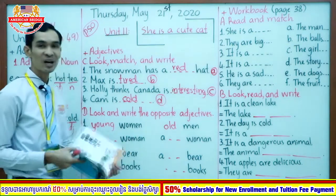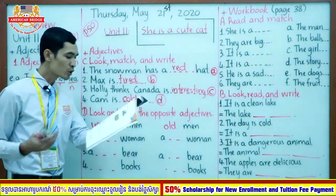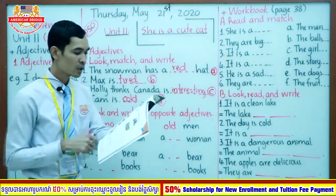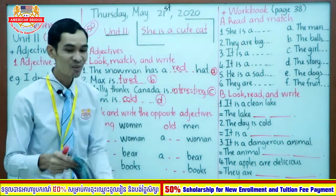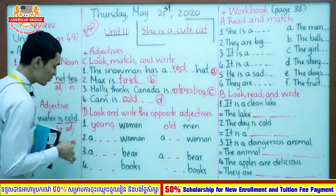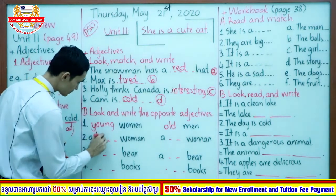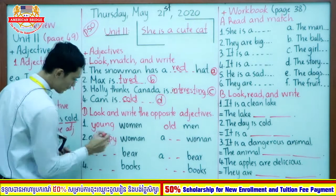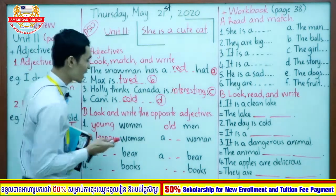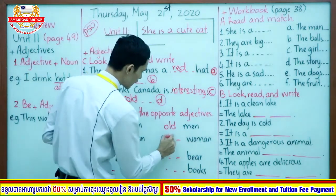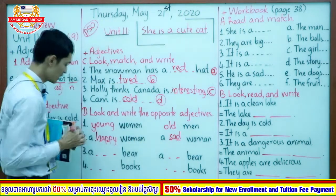Now let's check your answer with me. Number two: look at her face — a happy woman. Happy is opposite with sad. You can look at the girl and you know — she is very sad.